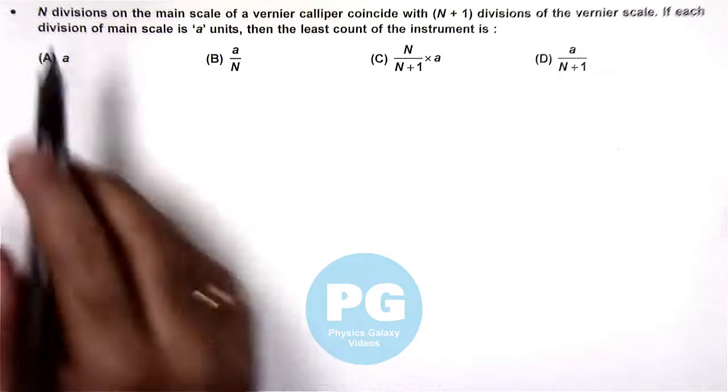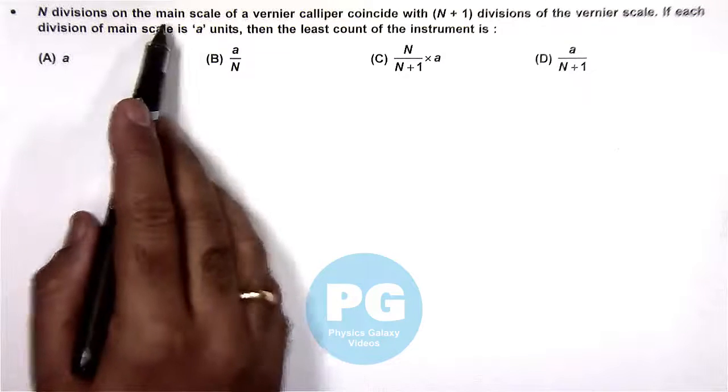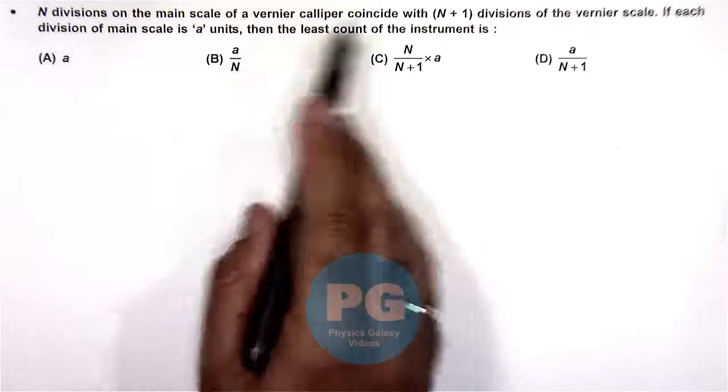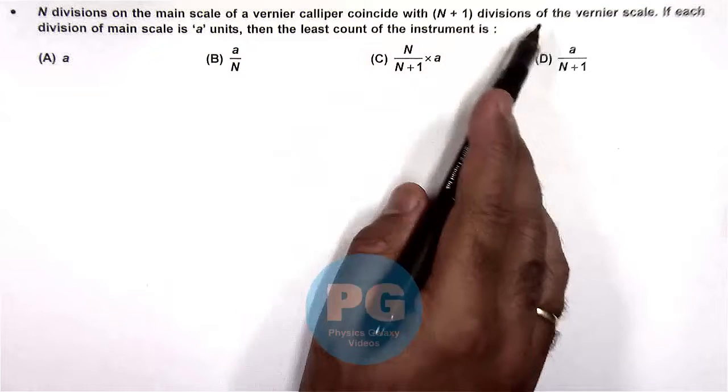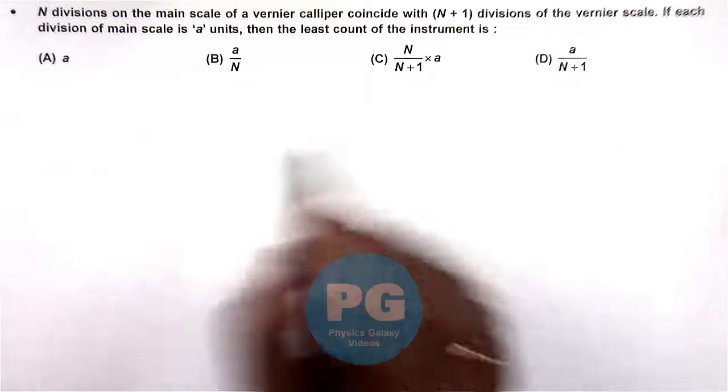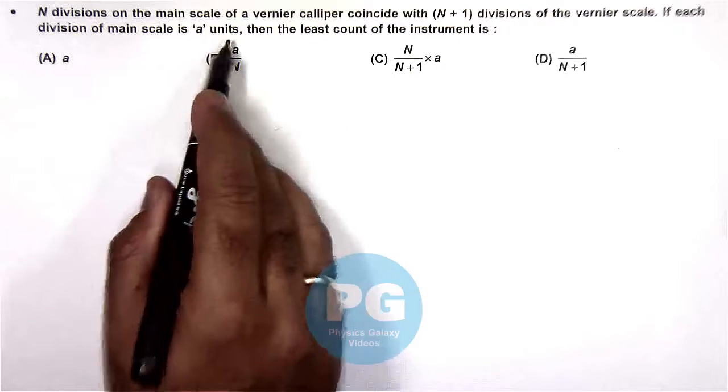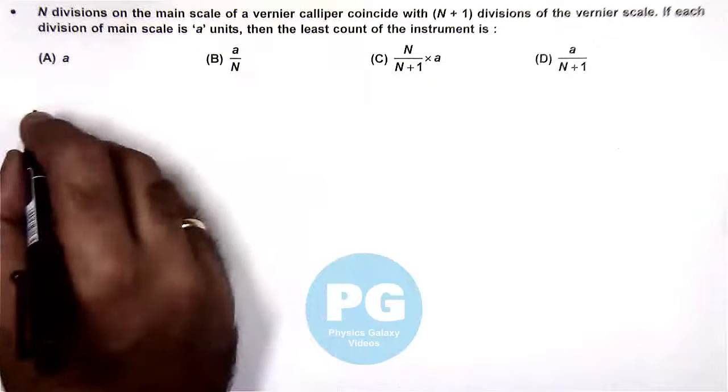In this question we are given that n divisions on the main scale of a vernier caliper coincide with n plus 1 divisions of the vernier scale. If each division of main scale is a units, then the least count of the instrument we are required to find.